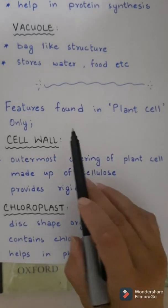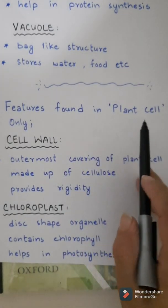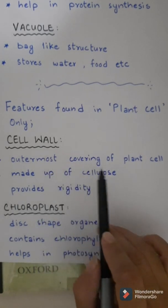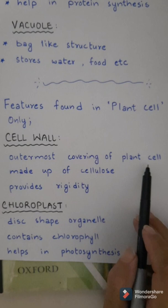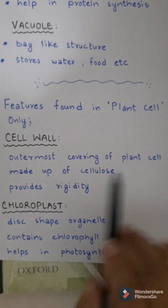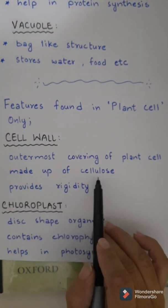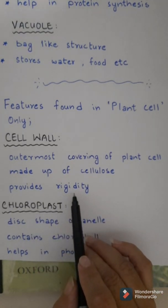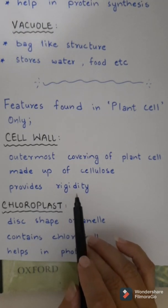Now I am going to discuss two other features which are only present in the plant cell. Cell wall is the outer covering of the plant cell; it is absent in the animal cell. It is made up of a tough material called cellulose, and due to the presence of cellulose it provides rigidity — meaning strength and hardness — to the cell.